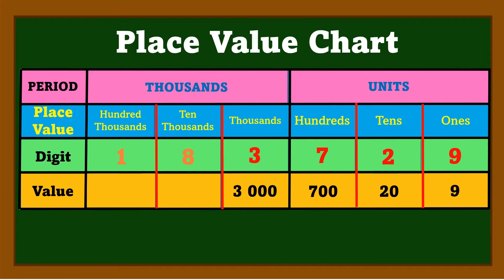The value of 3 is 3,000 because 3 is in the thousands place — 3 times 1,000 equals 3,000. Or we can write 3 and add zeros for the digits to its right; there are 3 digits to the right of 3, so we add 3 zeros. The value of 8 is 80,000 and the value of 1 is 100,000.